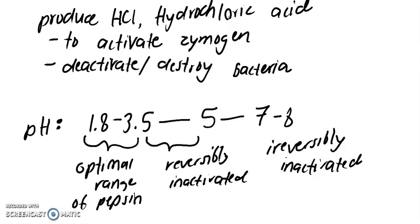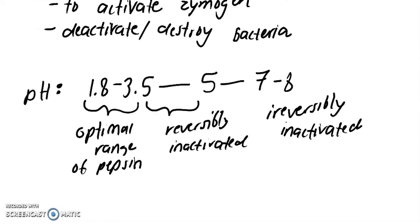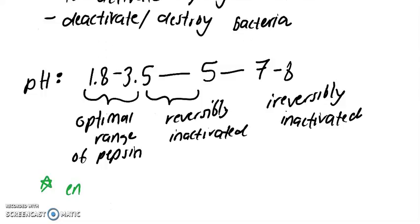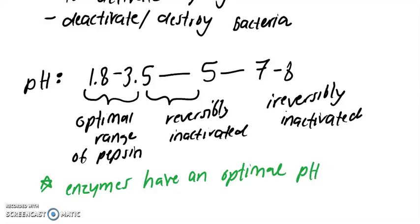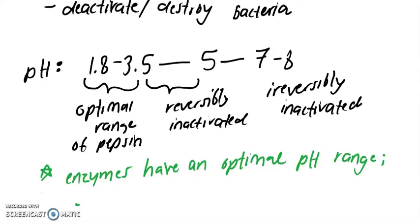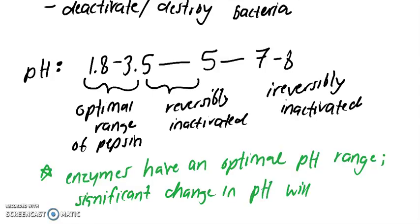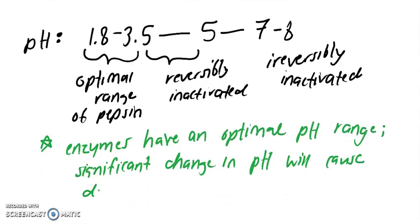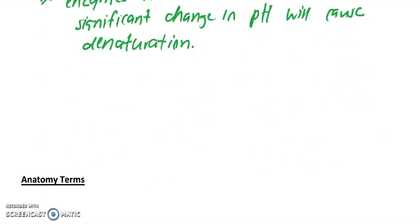From that point, we cannot renature this enzyme. So this just goes to show that enzymes have an optimal range of performance, optimal pH and temperature range. Placing it in a drastically different environment will cause denaturation. A significant change in pH will cause denaturation.